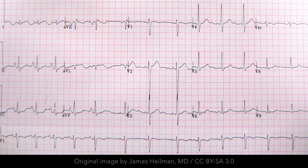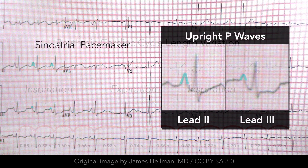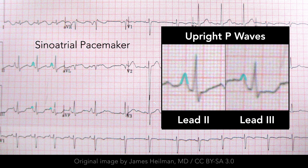Respiratory sinus arrhythmia is a benign phenomenon in which the PP interval varies with respiration. The rhythm is regularly irregular — the heart rate increases during inspiration and decreases during expiration. The variation between the shortest and longest cardiac cycle length, that is the PP intervals, is greater than 10%, or 120 milliseconds. The heart rate is between 60 and 100 beats per minute, although it may momentarily extend beyond these limits. It is important to note that this is in fact sinus rhythm — every QRS complex is preceded by a P wave with constant morphology and upright in leads 2 and 3, and the PR intervals are also constant.